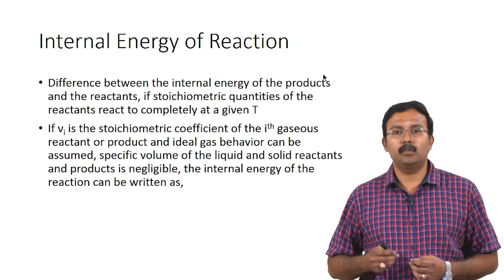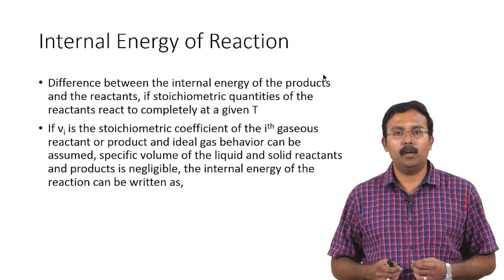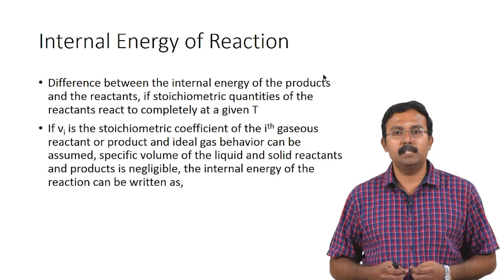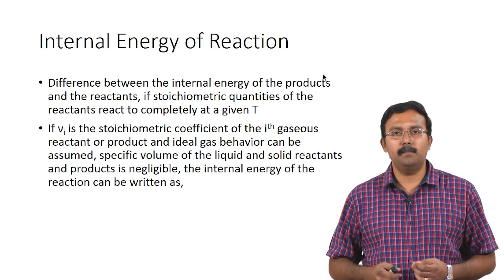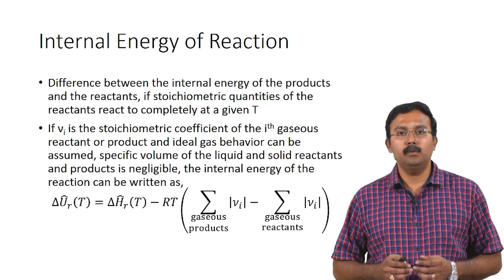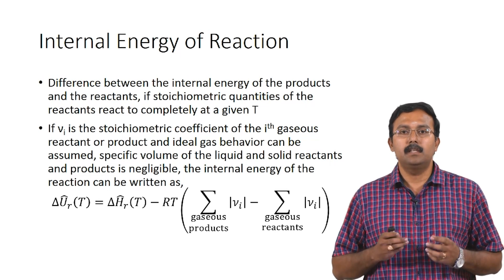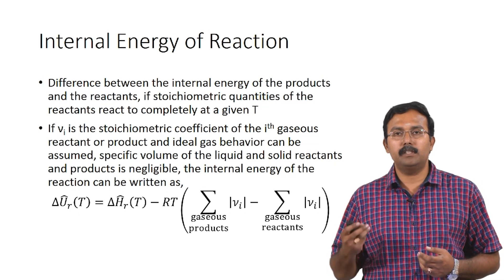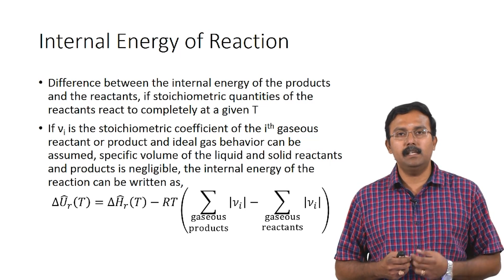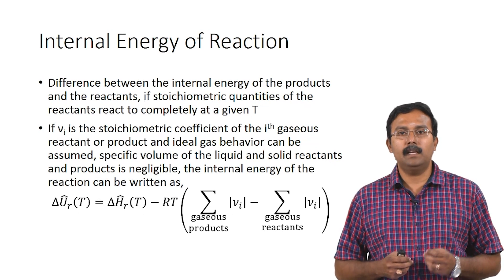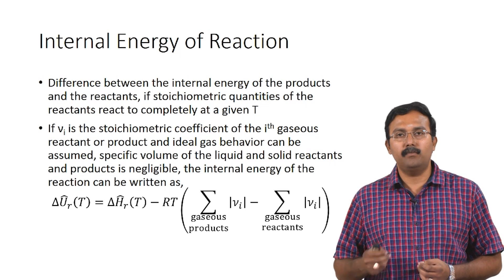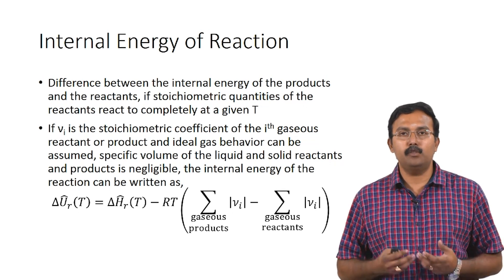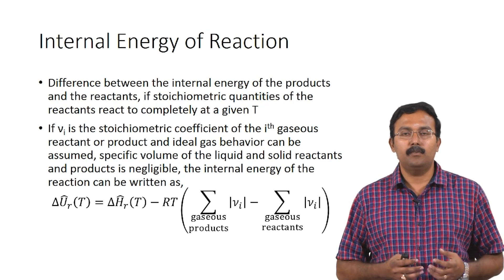If ν_i is the stoichiometric coefficient of the i-th gaseous reactant or product, and ideal gas behavior can be assumed, and specific volumes of liquid and solid reactants and products are negligible, then the internal energy of reaction can be written as: ΔU_R = ΔH_R − RT·(Σν_gaseous products − Σν_gaseous reactants). This is valid because we assume ideal gas behavior for all gaseous components, and the change in specific volume is very small for solids and liquids.